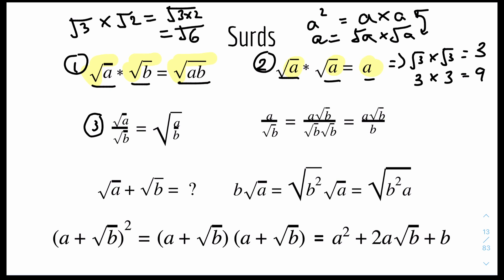For rule number 3, we have surd A divided by surd B. Both of these have a root or surd, so you can group them together because it's a common surd. For example, surd 3 over surd 2 equals a whole surd of 3 over 2. This can be useful when you have to group certain surds or non-surds together.